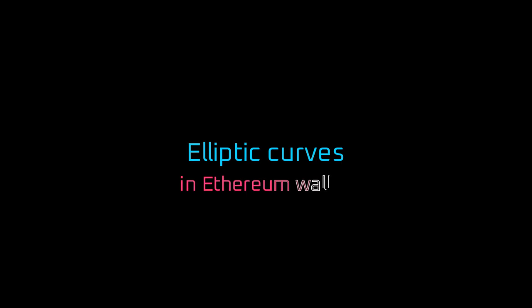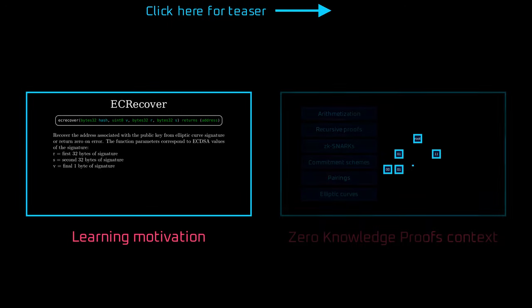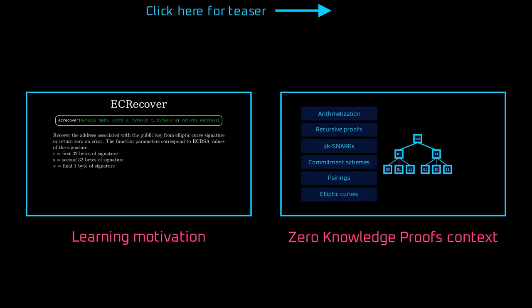Hi blockchain and cryptography enthusiasts! Welcome to the very first episode of ZKMarek where I explain the inner workings of all things crypto. In this episode you will learn about elliptic curves and how they are used in Ethereum wallets. Why are those fundamental to cryptography behind Ethereum and zero-knowledge proofs? Check out the link in the top right corner for the two-minute teaser to find out.